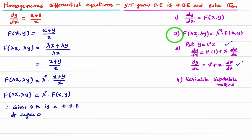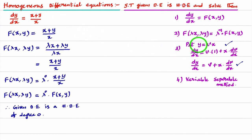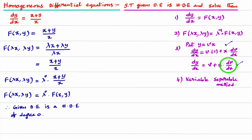The first two steps are over — we have shown that the given differential equation is a homogeneous differential equation. Next, we need to solve it. To solve a homogeneous differential equation, we follow a particular procedure. In step three, in the given differential equation, in place of y we write vx, and in place of dy/dx we write v + x·(dv/dx).